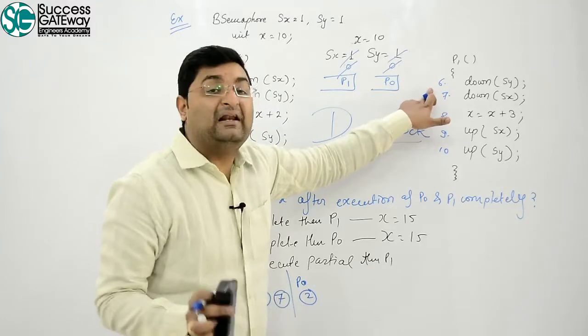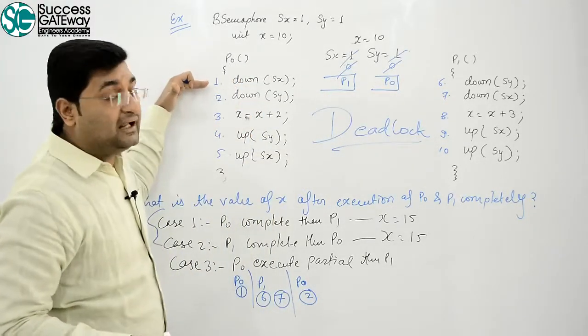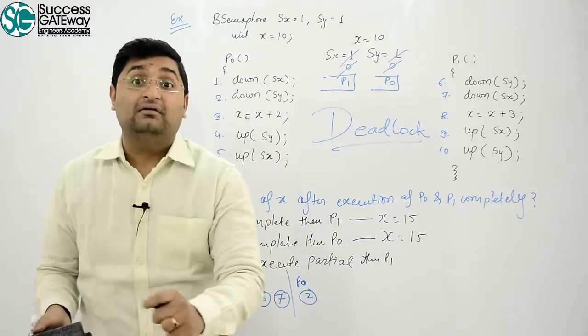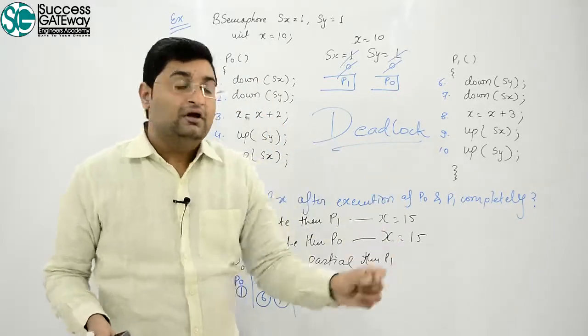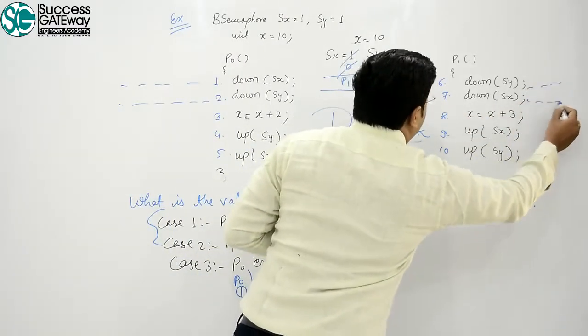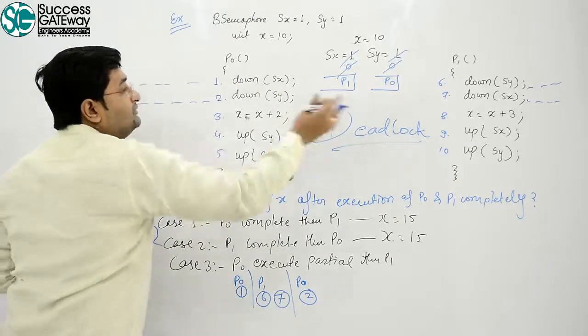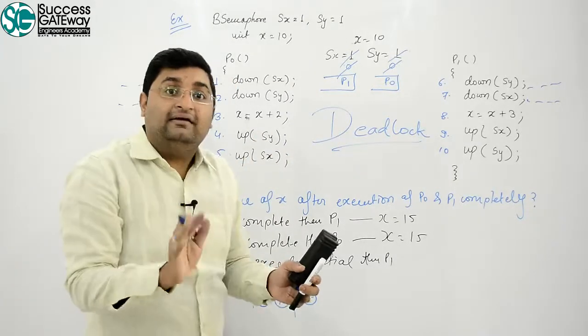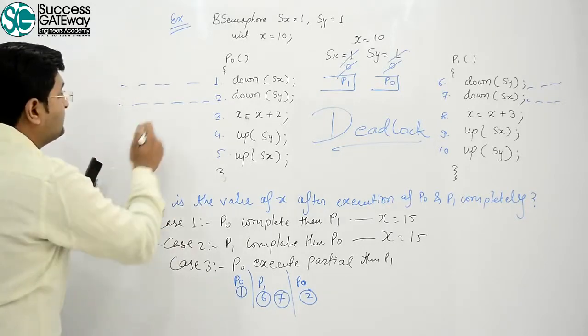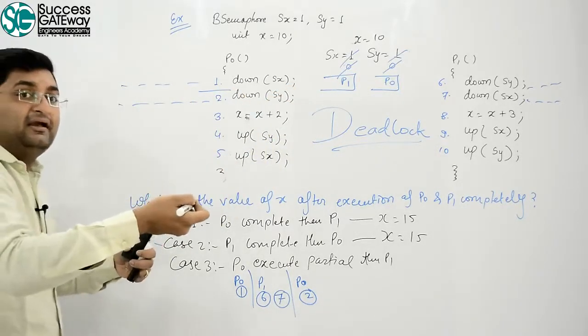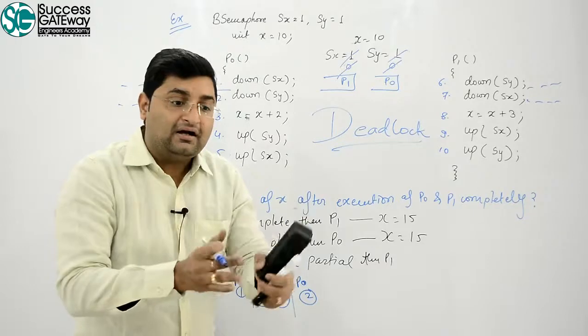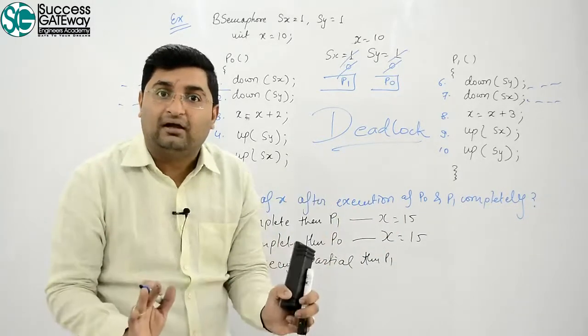So the answer is it may lead to a deadlock. Clear? Now variations can happen. If you try different orderings, you'll get an overall idea of what gets blocked or not. If both processes are blocked, that means deadlock has occurred. Clear?